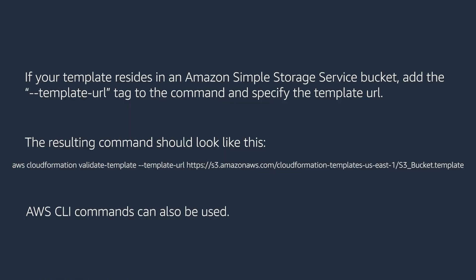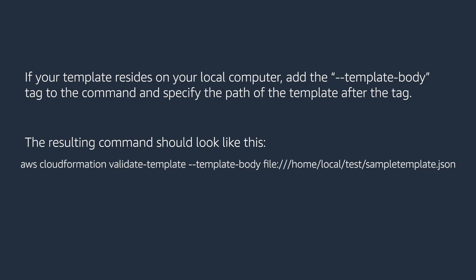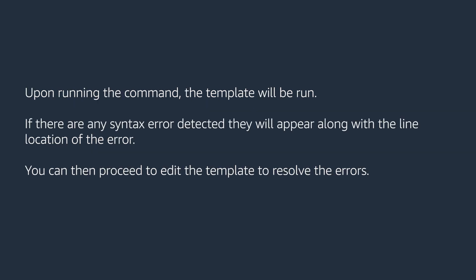If your template resides in an Amazon S3 bucket, add a template URL tag to the command and specify the template URL — the resulting command should look like this. If your template resides on your local computer, add the template body tag to the command and specify the path of the template after the tag — the resulting command should look like this. Upon running the command, the template will be run. If there are any syntax errors detected, they will appear along with the line location of the error. You can then proceed to edit the template to resolve the errors.